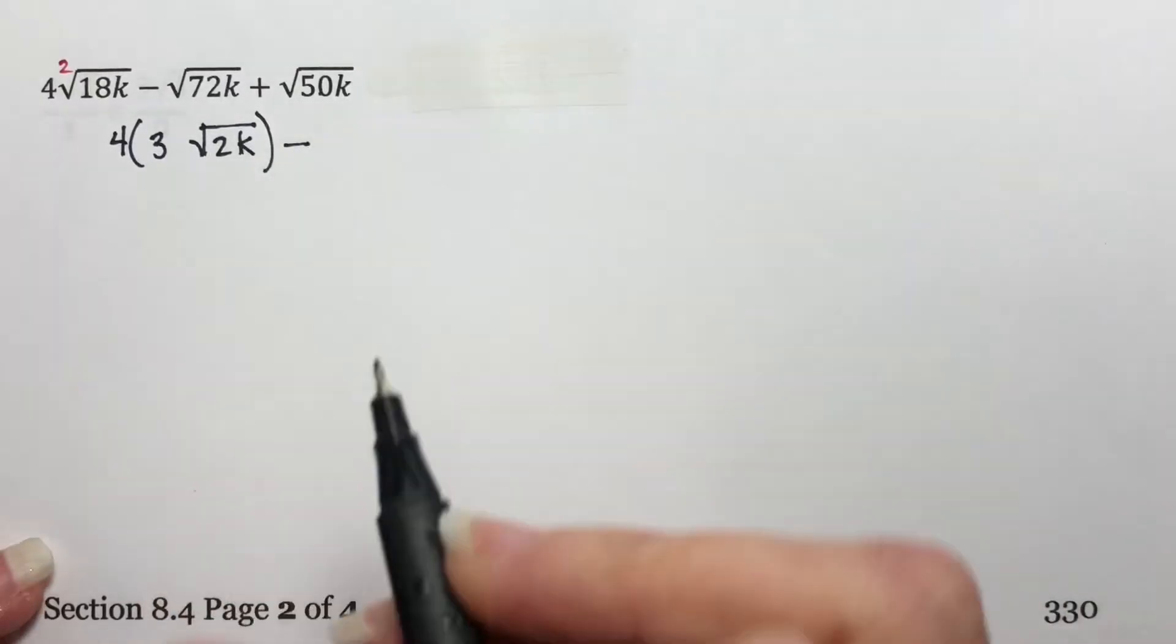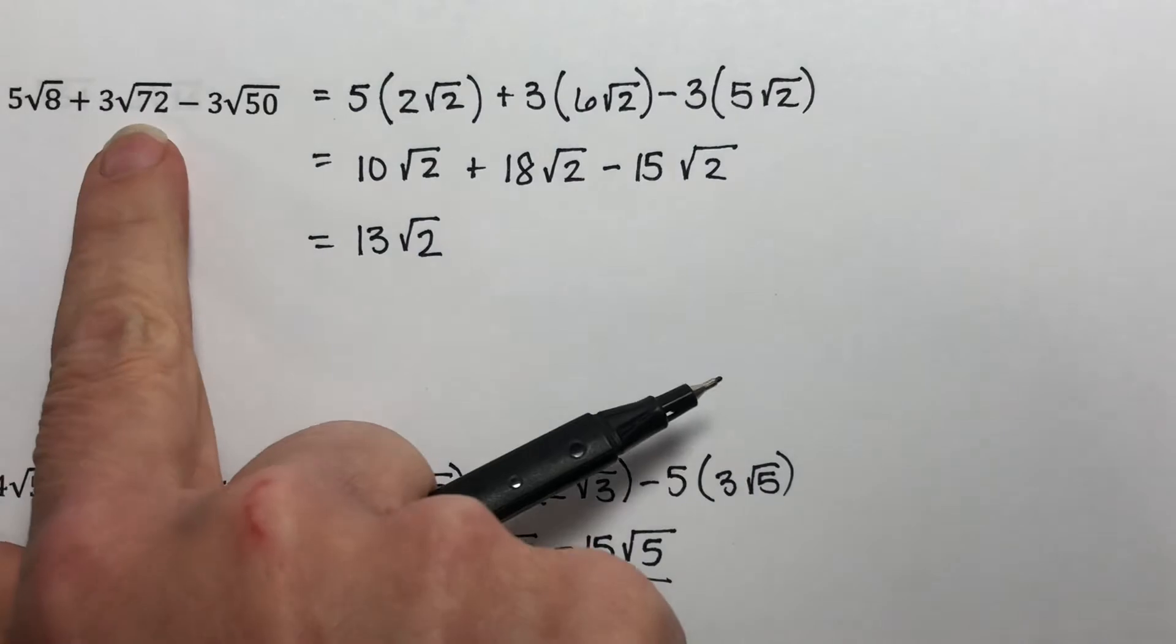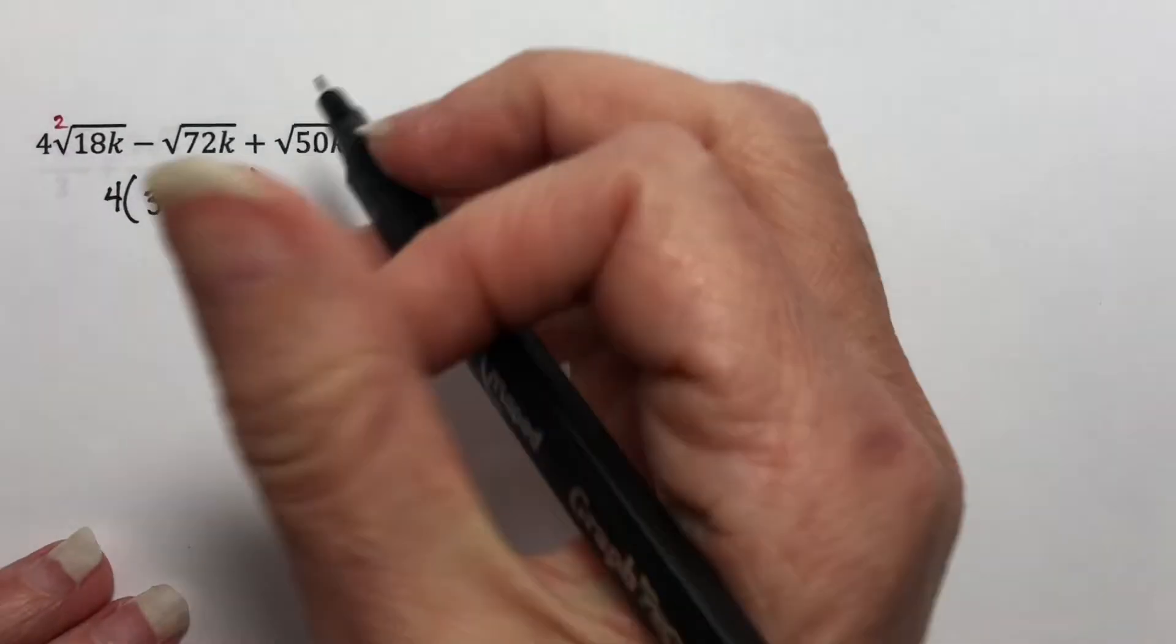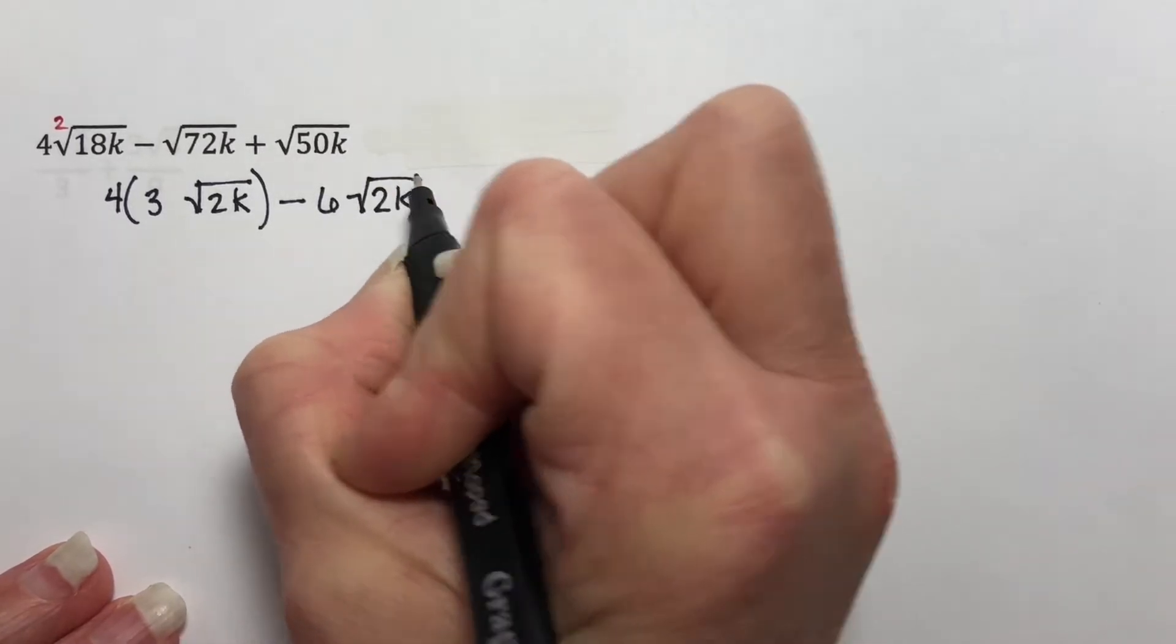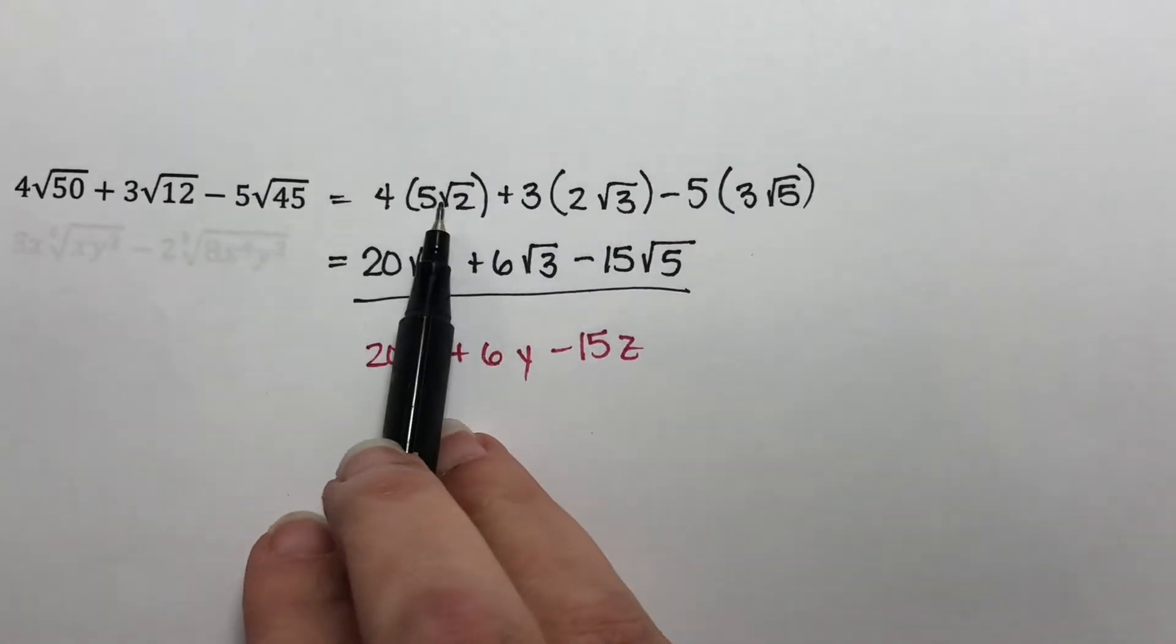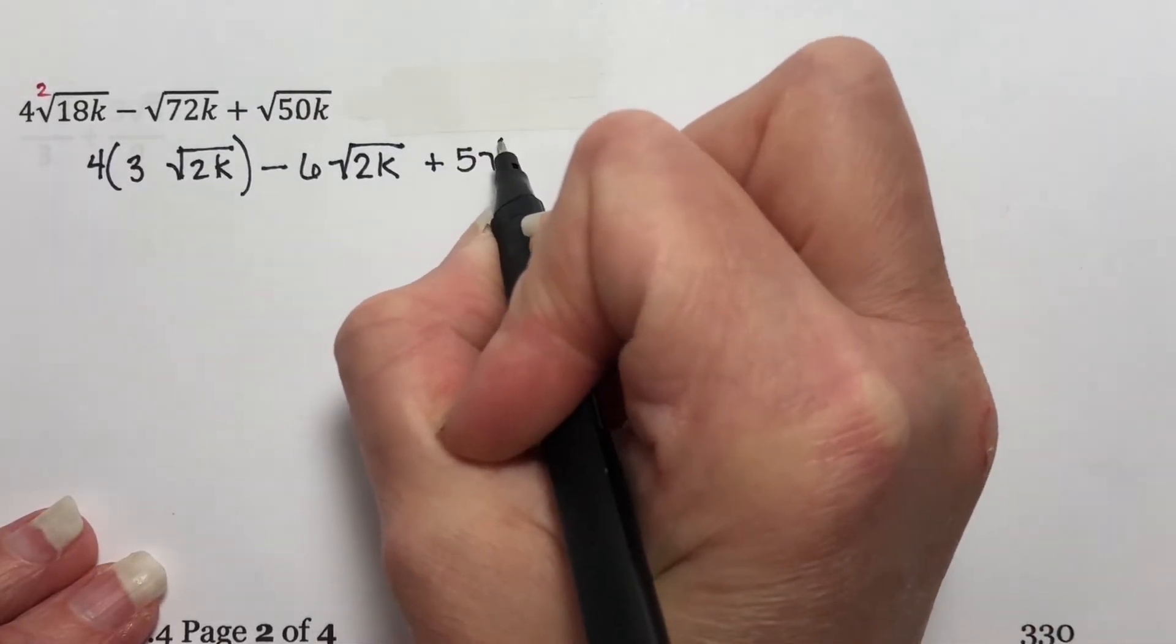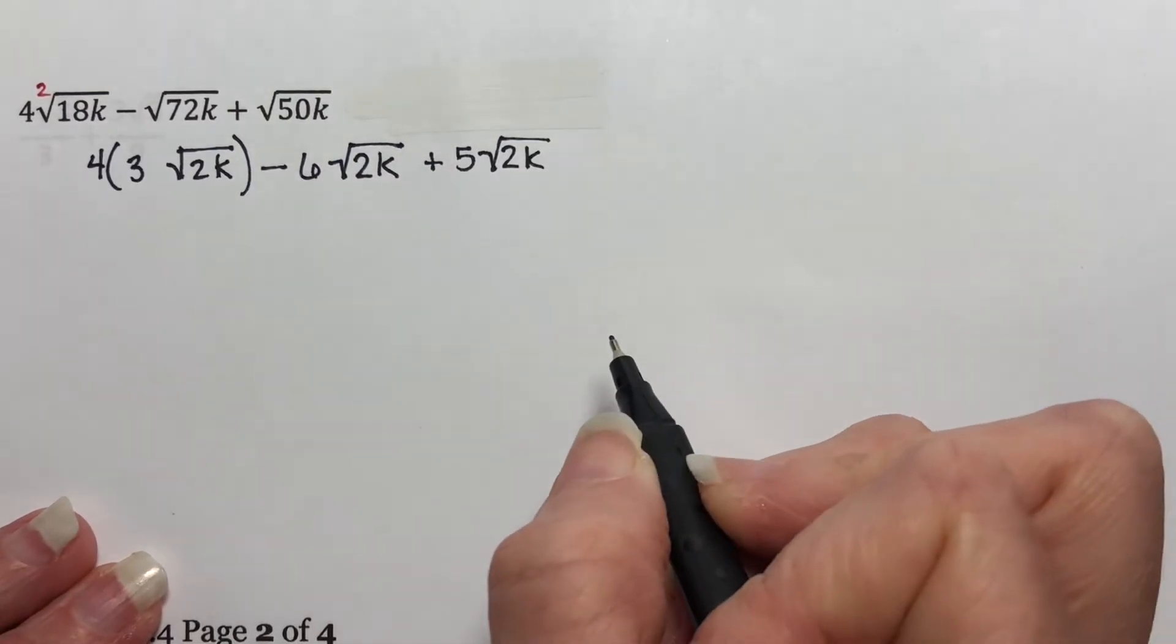And then the same thing happens with each of these k's. So this is minus the square root of 72. We've already done this on this page. See, a square root of 72 was six times the square root of two. And then the k is stuck on the inside. Plus the square root of 50. We did that right here. Square root of 50. So it's five square root of two. And the k is stuck on the inside.